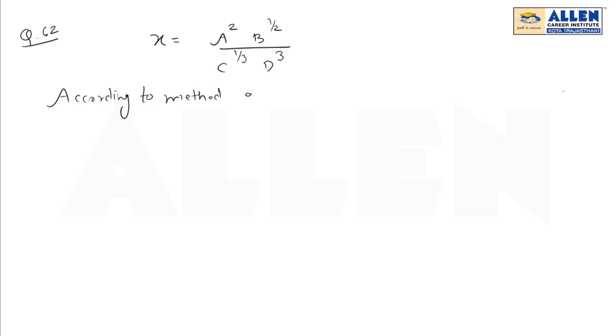According to the method of errors, errors always get added. So here we can write (ΔX/X) × 100 = 2(ΔA/A) + (1/2)(ΔB/B) + (1/3)(ΔC/C) + 3(ΔD/D), as we have to find the percentage value.